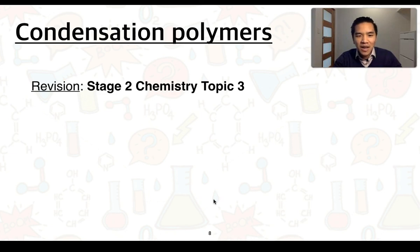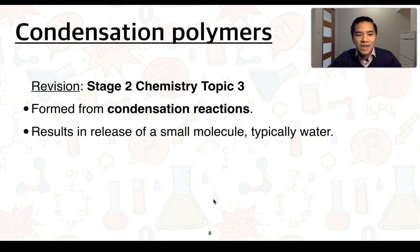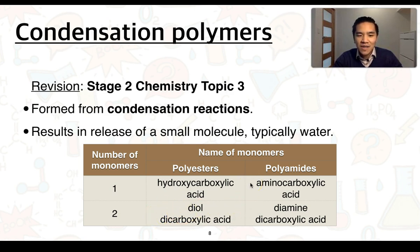Condensation polymers were covered previously in Stage 2 chemistry topic 3. They are formed from condensation reactions, which result in the release of a small molecule, typically water. We can classify condensation polymers as either polyesters or polyamides. Polyesters consist of ester functional groups; polyamides have amide functional groups. They can be formed in one of two ways: with one monomer or with two monomers. For polyesters, one monomer would be a hydroxycarboxylic acid; two monomers would be a diol and a dicarboxylic acid. For polyamides, one monomer is an aminocarboxylic acid; two monomers are a diamine and a dicarboxylic acid.